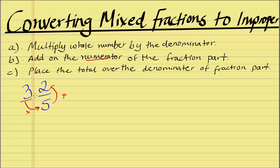So again, 3 times 5 is 15, plus 2, the numerator, which is step 2.